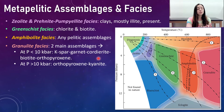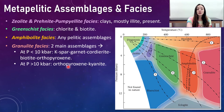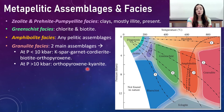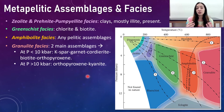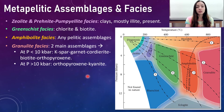In the granulite facies — the really high temperature grade — there are two main assemblages for pelitic rocks, depending on pressure. At less than 10 kilobars, an assemblage of K-spar, garnet, cordierite, biotite, and orthopyroxene is typical. At over 10 kilobars of pressure, you'll get an assemblage of orthopyroxene and kyanite. These assemblages represent the dominant minerals in those zones, though other minor constituents can obviously be present.